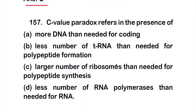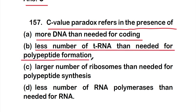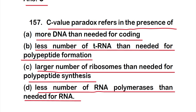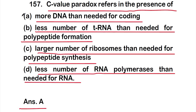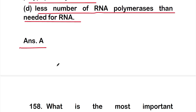Question 157: The C-value paradox refers to the presence of — option A: more DNA than needed for coding; option B: less number of tRNA than needed for polypeptide formation; option C: larger number of ribosomes than needed for polypeptide synthesis; option D: less number of RNA polymerases than needed for RNA synthesis. The correct answer is option A — more DNA than needed for coding.